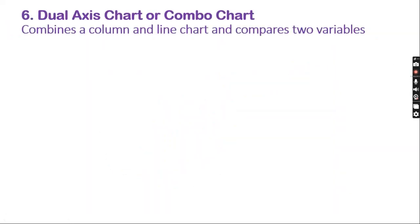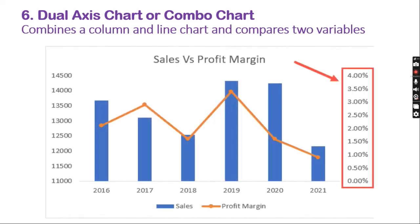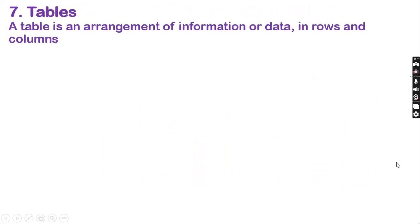Number 6: Dual axis chart. A dual axis chart combines a column and line chart and compares two variables. Here in this example, we can see that there are two axes — one on the left shows the sales figure and one on the right shows the profit margin. We have a bar chart which shows the sales over the years from 2016 to 2021, and a line chart which shows the fall and rise in the profit margin.